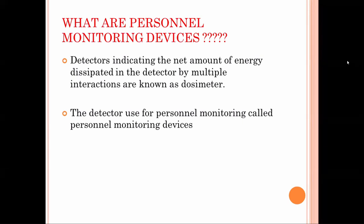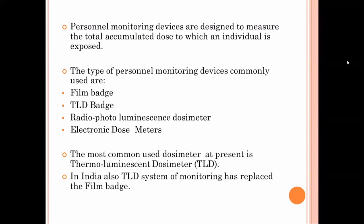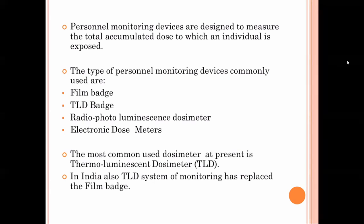Personal monitoring devices are designed to measure the total accumulative dose to which the individual is exposed. After set sessions, we analyze this dose to determine how much exposure has been received. Types of personal monitoring devices include: film badge, TLD badge, radio-photoluminescence dosimeter, and electronic dosimeter. The most common dosimeter currently used is the thermoluminescence dosimeter (TLD), which has replaced the film badge in India.